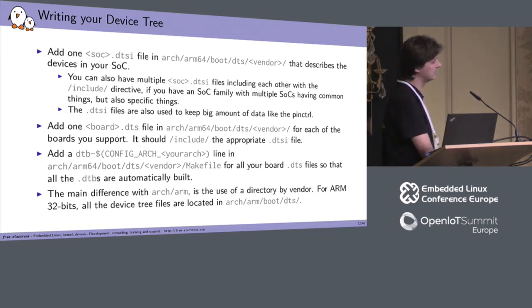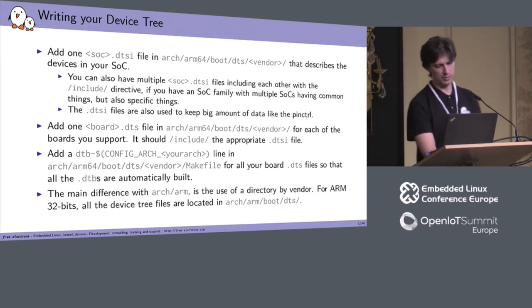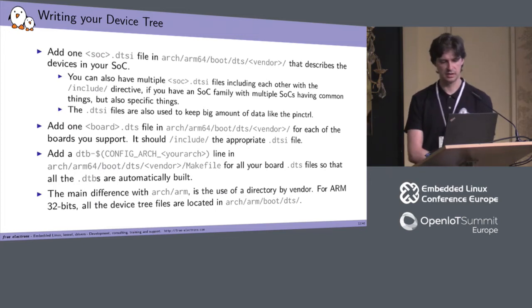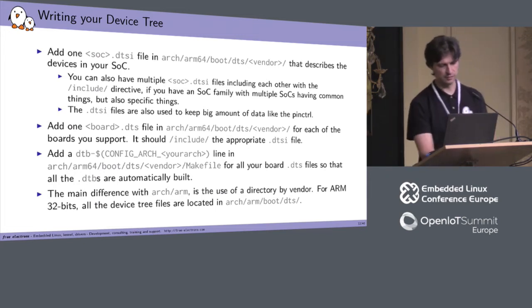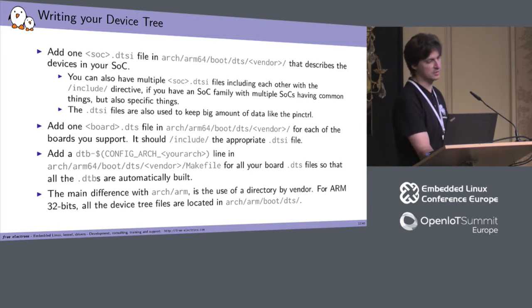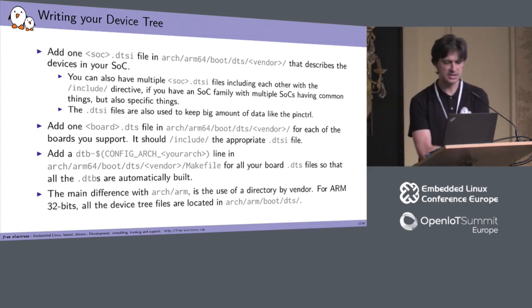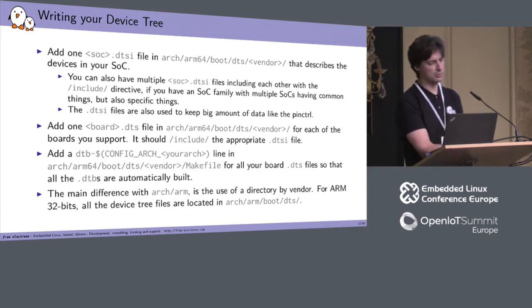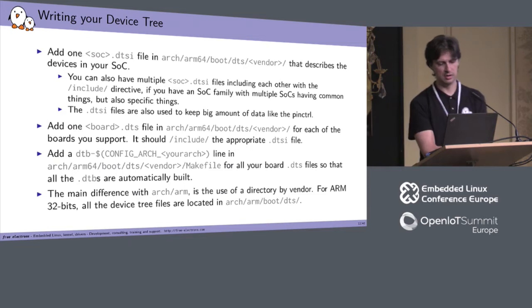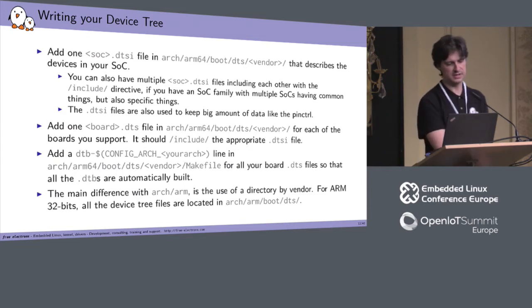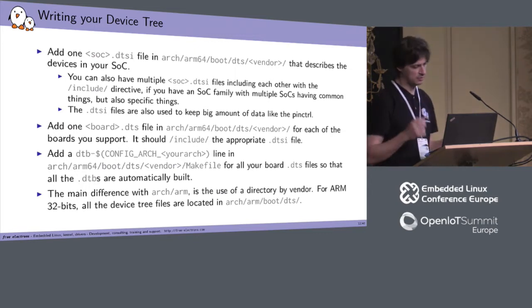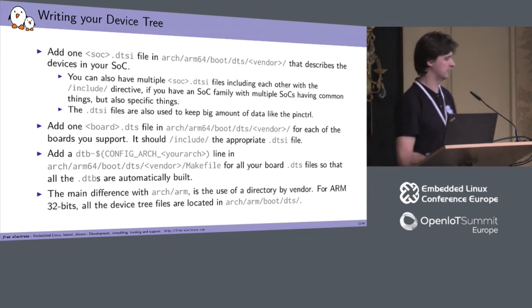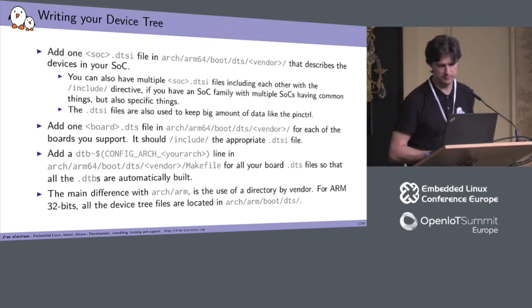The main difference with ARM32 is the use of a directory per vendor. For ARM 32-bit, all device tree files are located in arch/arm/boot/dts. Whereas for ARM64, it's arch/arm64/boot/dts/[vendor-name]/[your-device-tree-file].